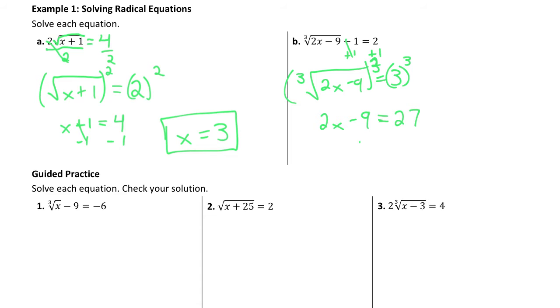So 2x minus nine equals three to the third power is 27. And then I continue solving. I add nine to both sides. This becomes 2x equals 36. x equals 18.